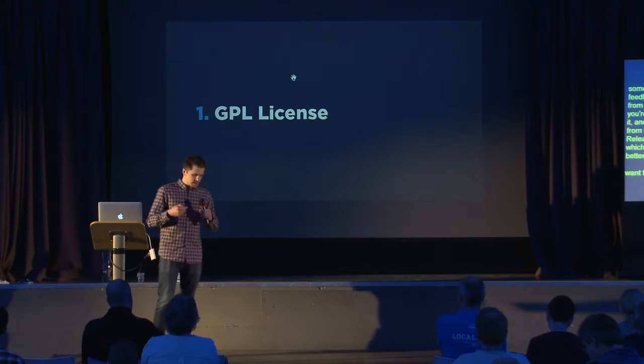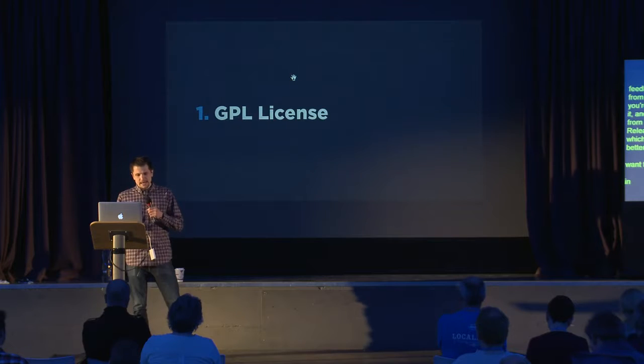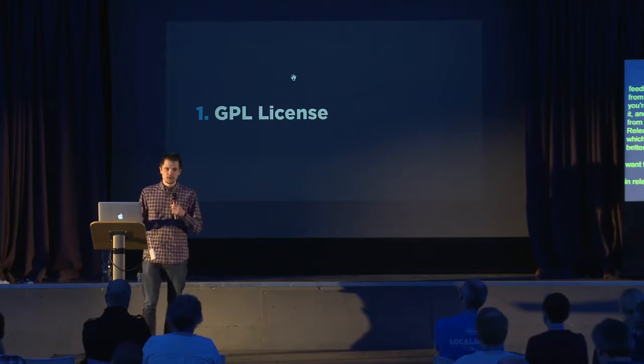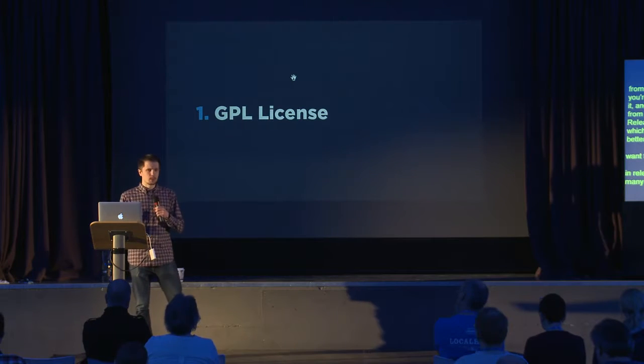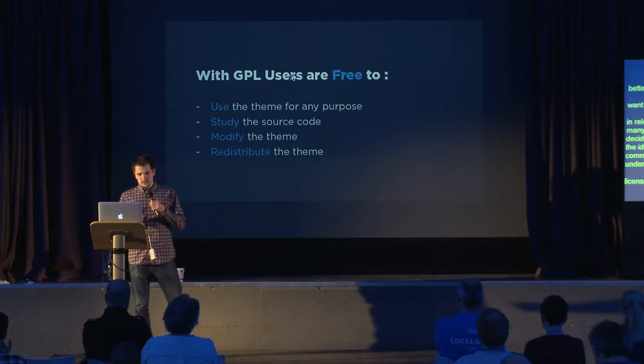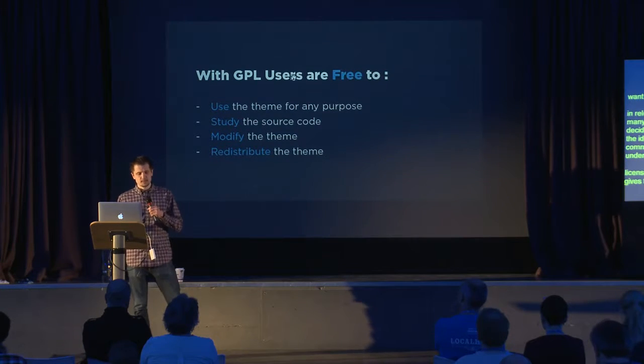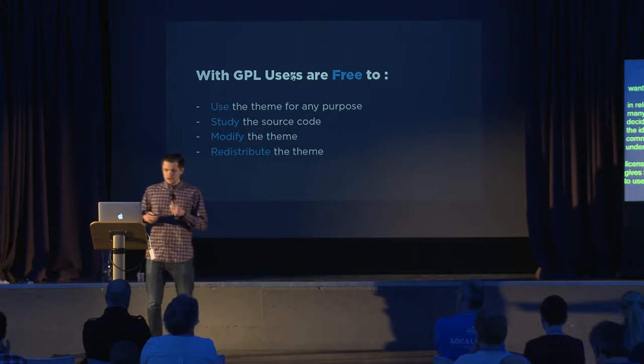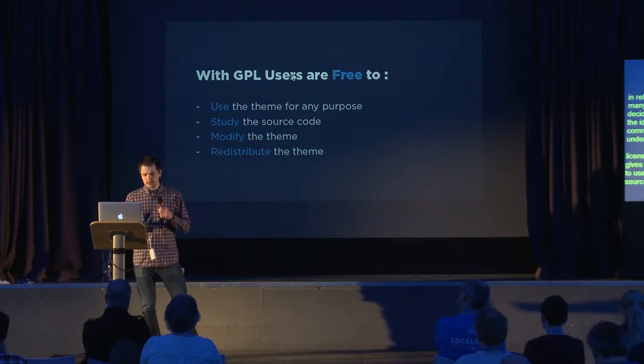So the first tip I wanted to talk about in releasing themes is the GPL license. I know that many of you are familiar with the GPL license, but I decided to cover it anyway, because the philosophy and the idea behind this license kind of drives the entire community, because WordPress itself is released under the GPL license. Let's quickly refresh in our memory what this license gives the user of the theme in any software — it gives the user four basic freedoms. He is basically free to use the theme for any purpose, free to study the source code, free to modify it and redistribute the theme, or redistribute the modified copies.